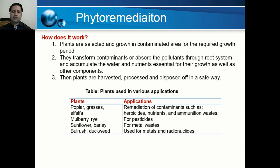Different plants are used in various applications: poplar and grasses are used for remediation of herbicides, nutrients, and ammonious waste. Mulberry and rye are used for pesticides. Sunflower and barley can be used for metal waste. Bullrush and duckweed can be used for metals and radionuclides. Other useful plants include alfalfa, rice, and duckweed.